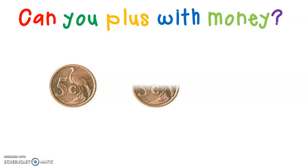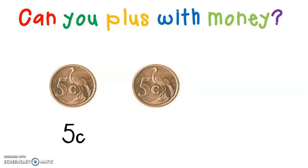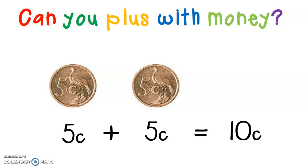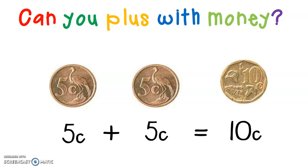Here is a 5 cent coin and a 5 cent coin. We have to plus the two coins together to see how much money I have. So we are going to say 5 cents plus 5 cents equals 10 cents. And a 10 cent looks like this. So if I add two 5 cents, I get a 10 cent.